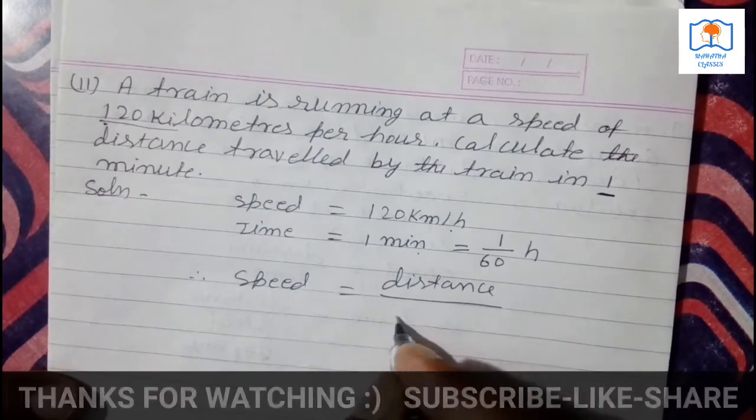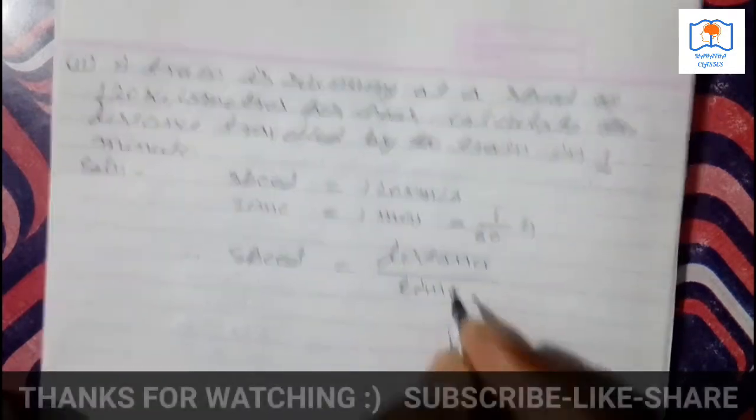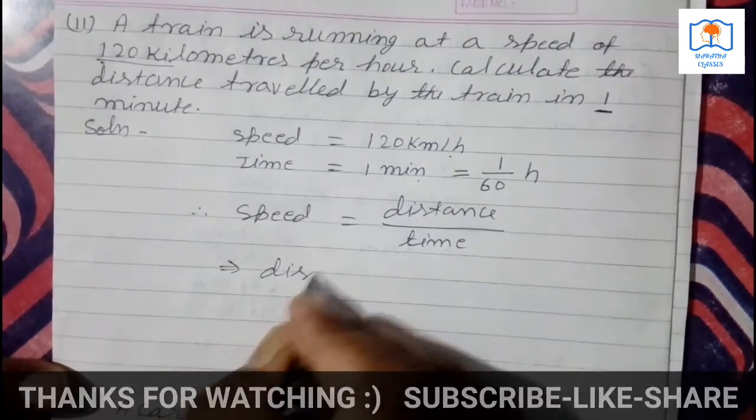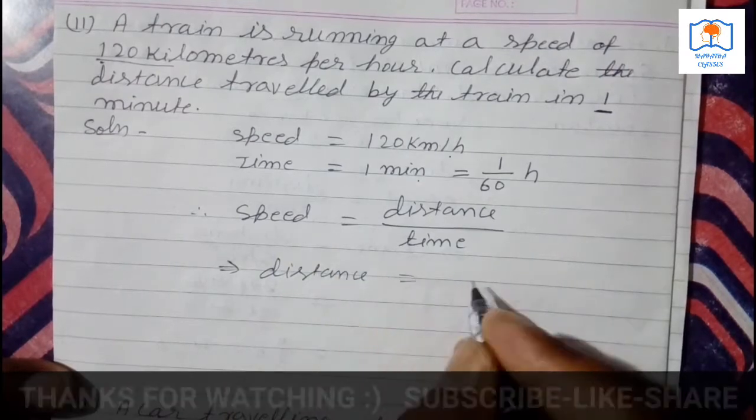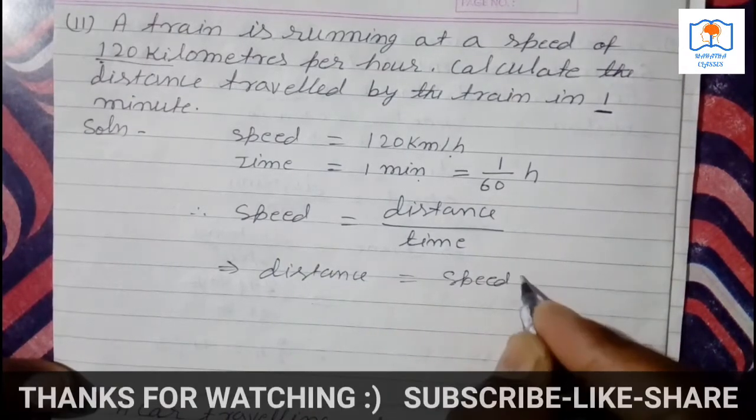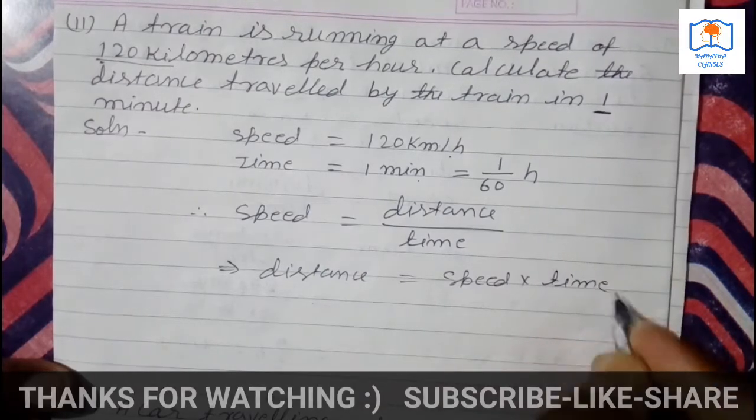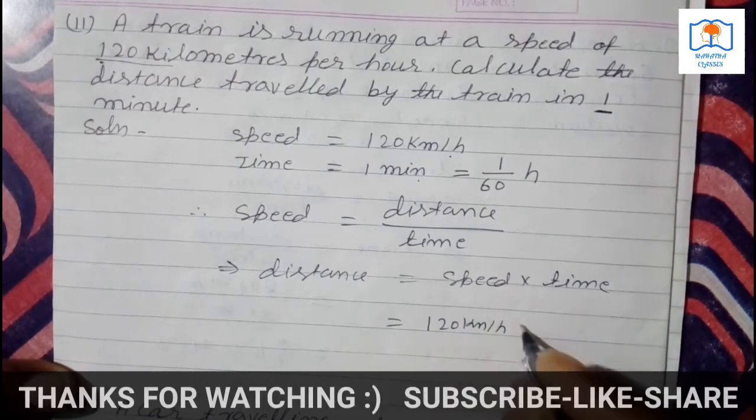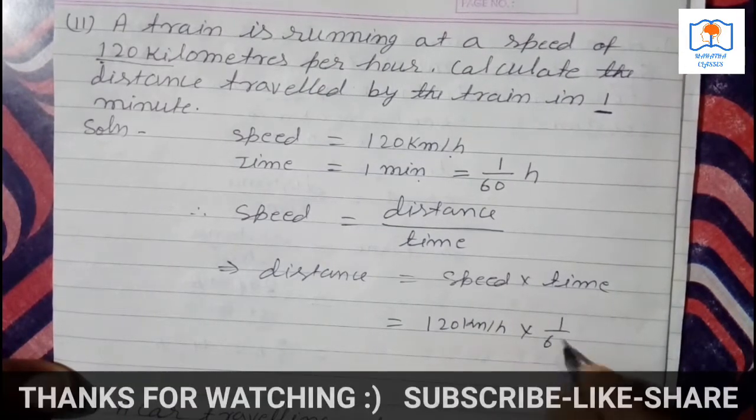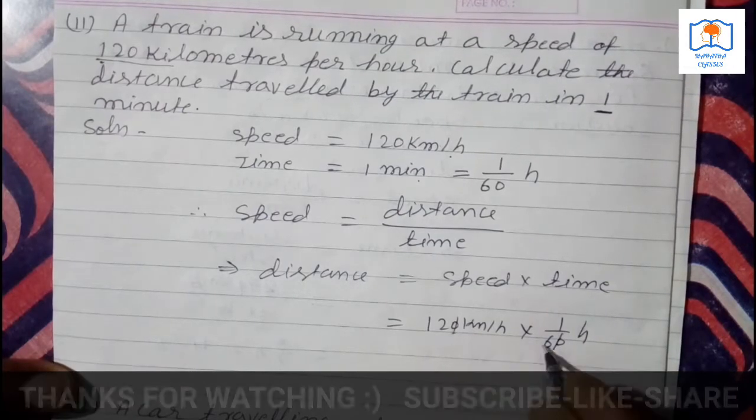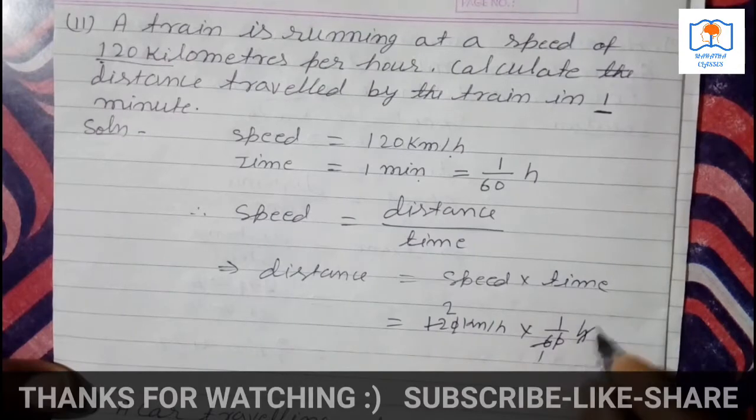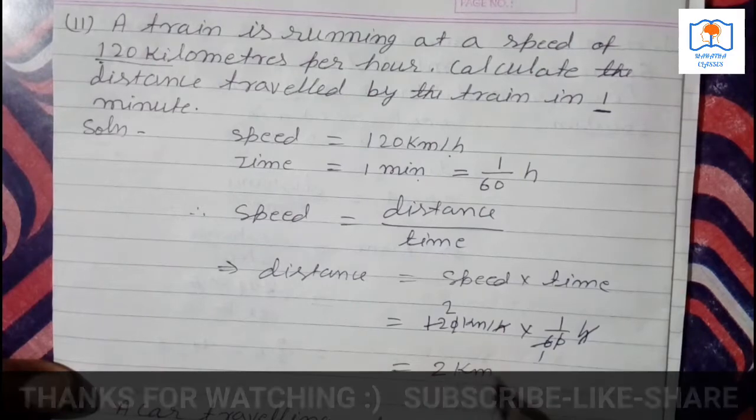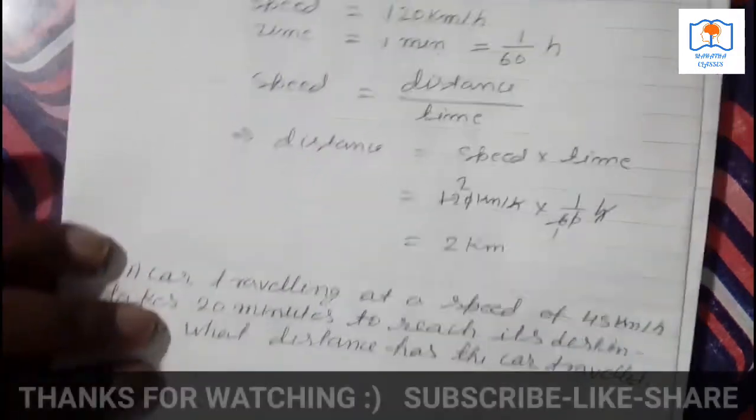Distance equals speed into time. 120 km per hour times 1 by 60 hour. Zero-zero divide, 6, 1, 2. This is cut. 2 km. In 1 minute, 2 km. Now question number 12.